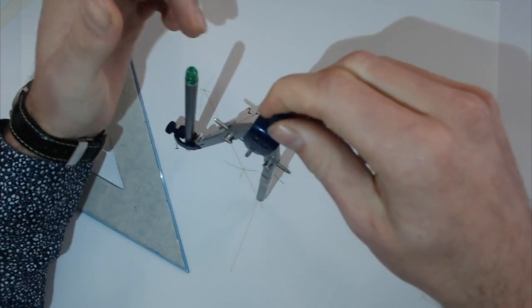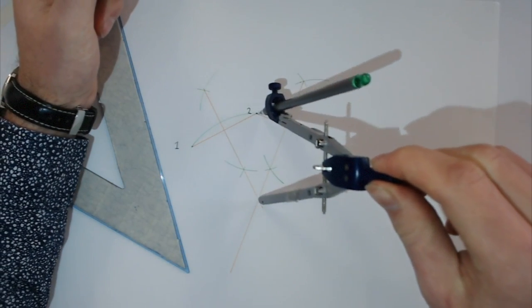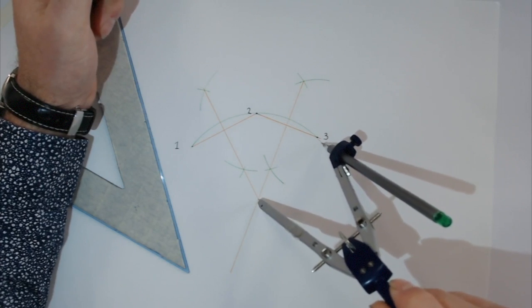Now we set it to one of the points, revolve the circle around, and it passes through all points.